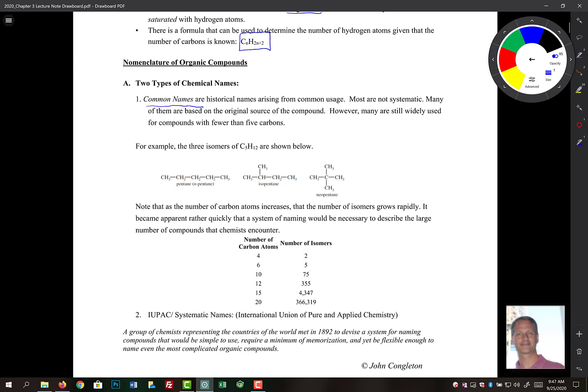Common names are historical names and they arise often from common usage. Acetic acid, for example, is a common name. The IUPAC or the systematic name of this is ethanoic acid.